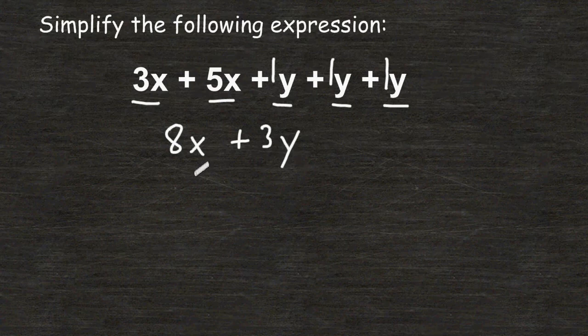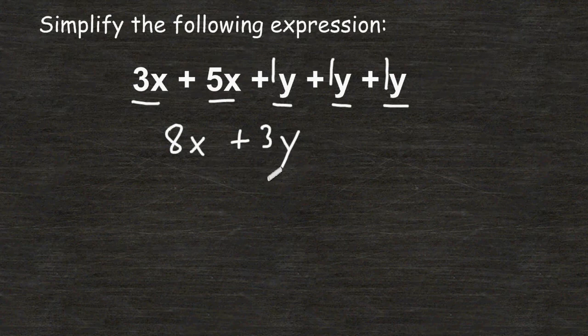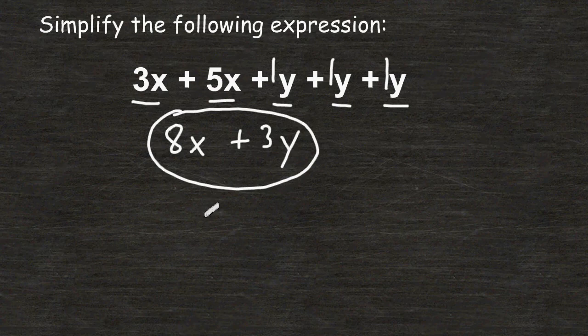Now we have simplified the expression to two terms, and we cannot combine those terms because they are not like terms. So this is as simple as we can state our expression, 8x plus 3y.